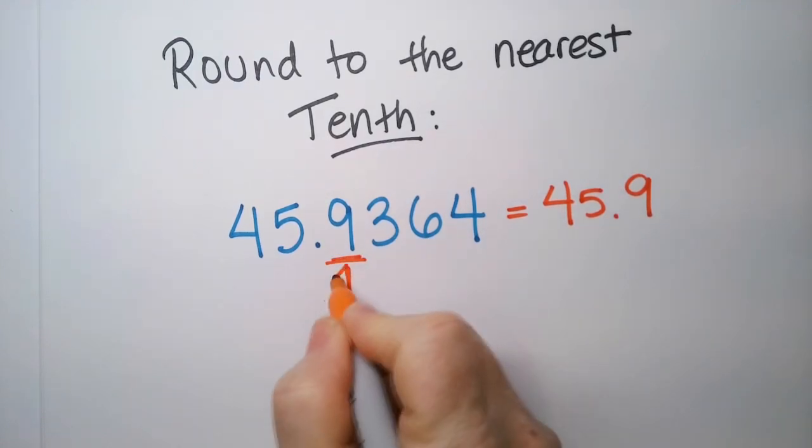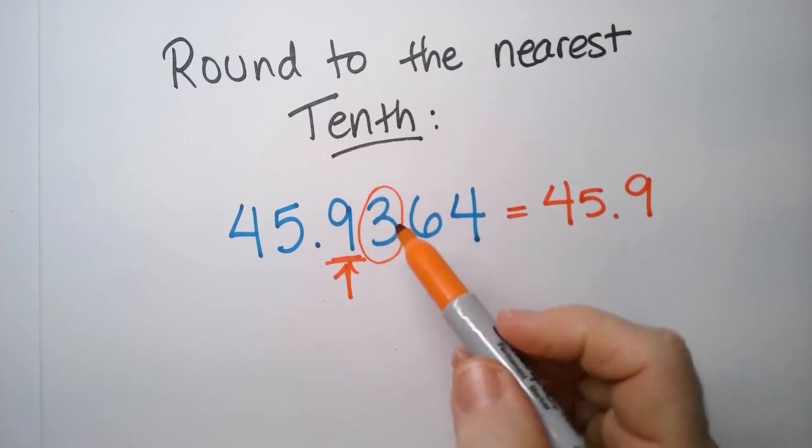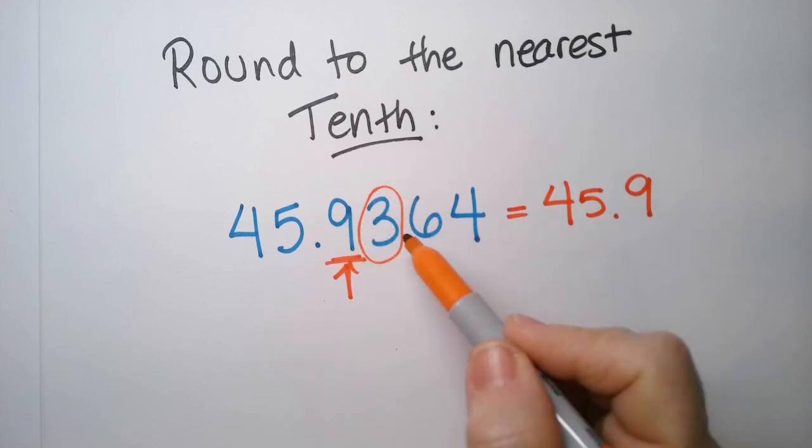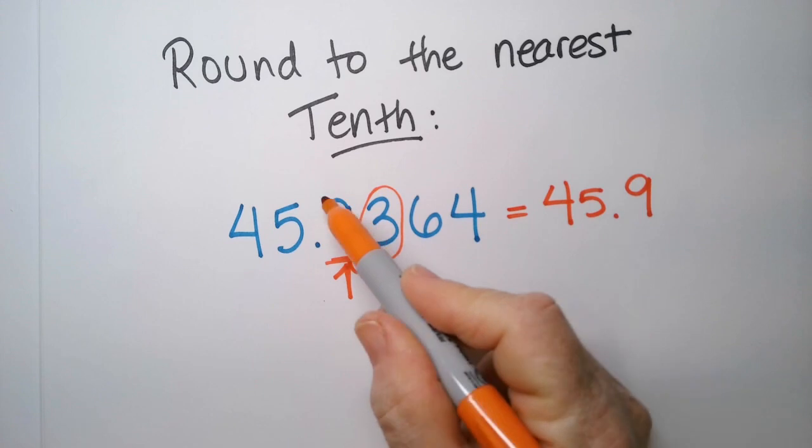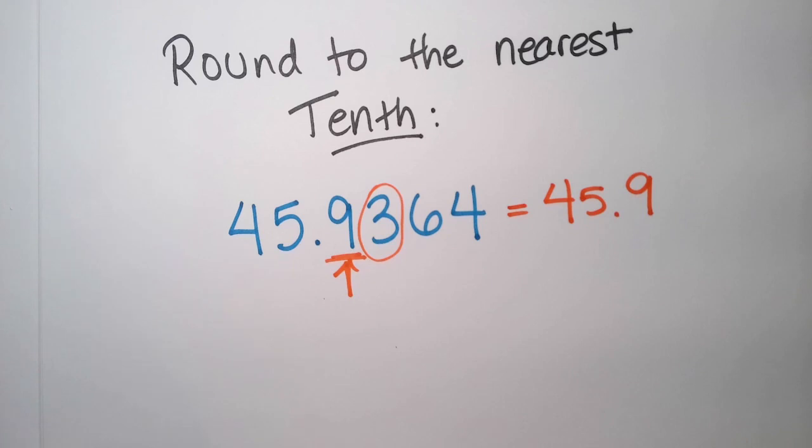So you first find out where is the tenths, it's right there. You look next door, if this is a 5 or higher, then this bumps up, but since it's not, it stays where it is, and then this part always gets removed.